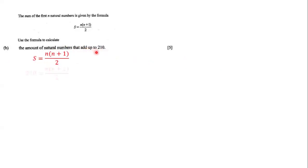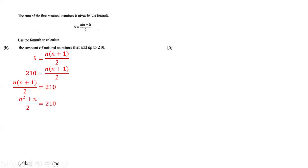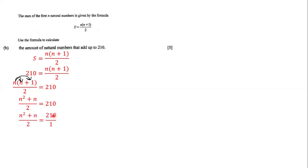Since S is 210 we substitute that in. We switch the equation so we have n(n+1)/2 = 210. Next we distribute: n times n is n squared, and n times 1 is n, giving us n squared plus n all over 2 equals 210.